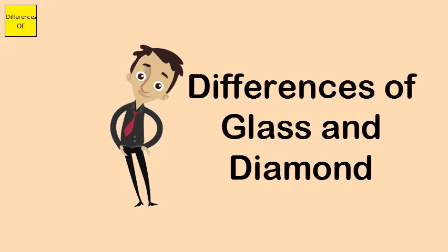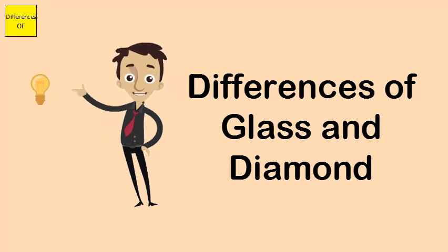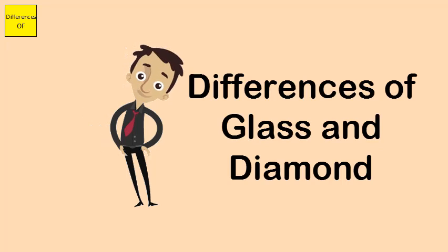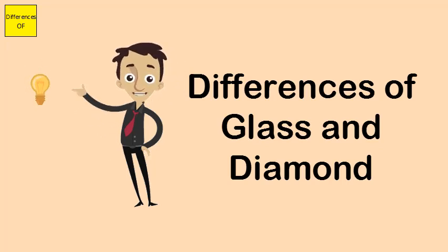Glass is not used as ornaments and is abundantly available, while diamonds are rare. Glass is made by man, whereas diamond is taken from nature.